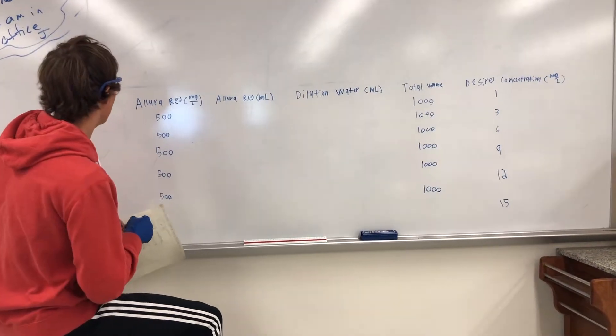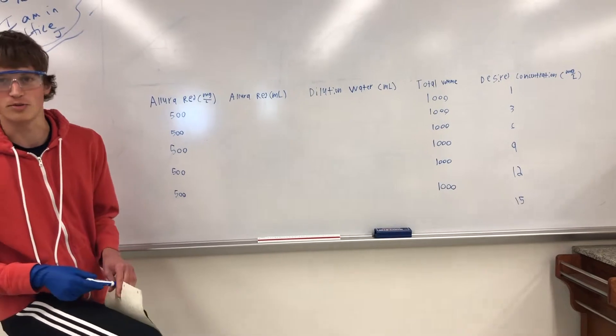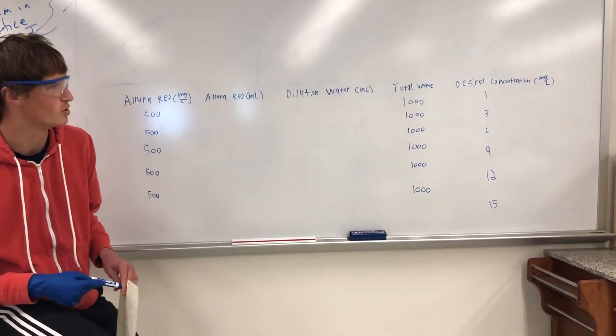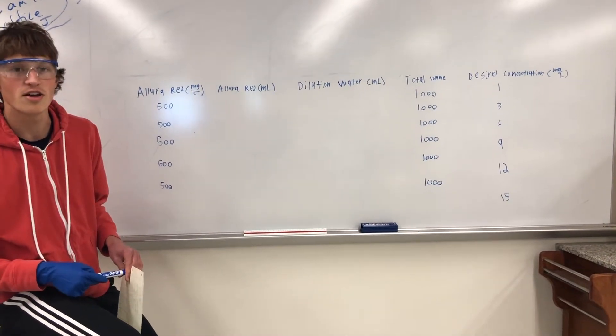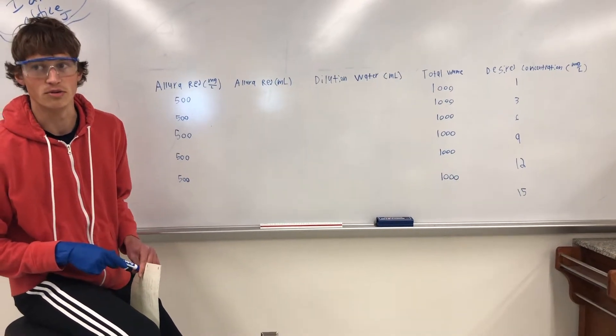So before we begin, we must dilute our initial concentration of 500 milligrams per liter of Valora Red down to our desired concentrations of 1, 3, 6, 9, 12, and 15 milligrams per liter.